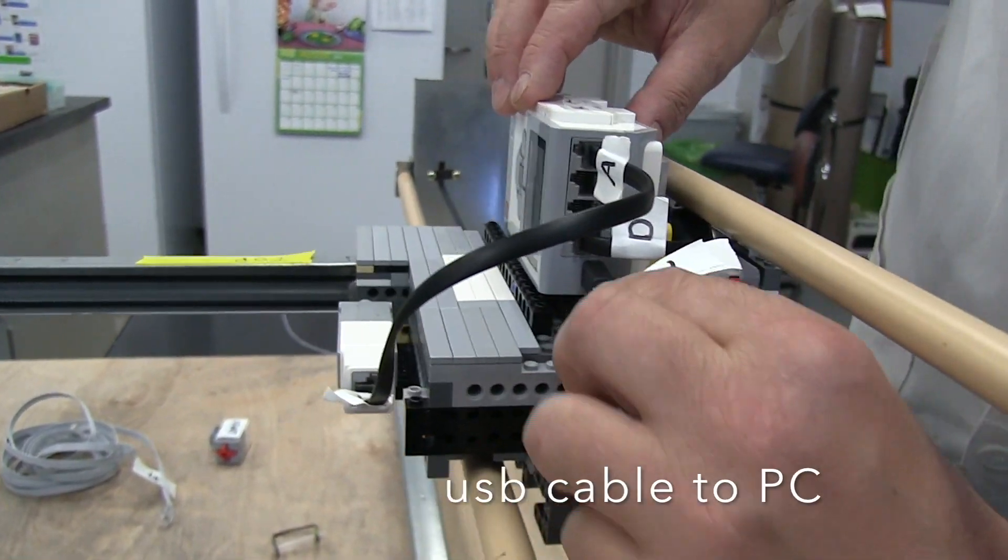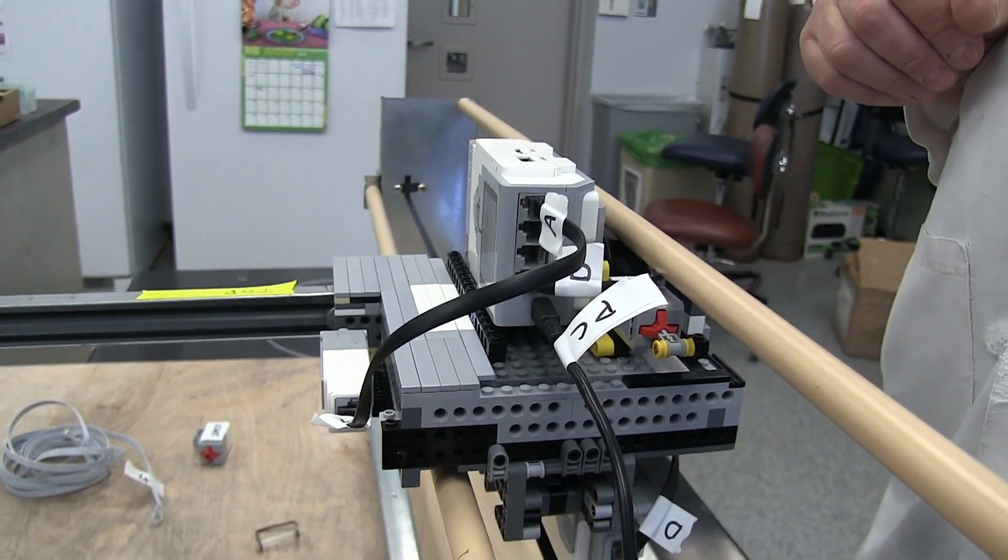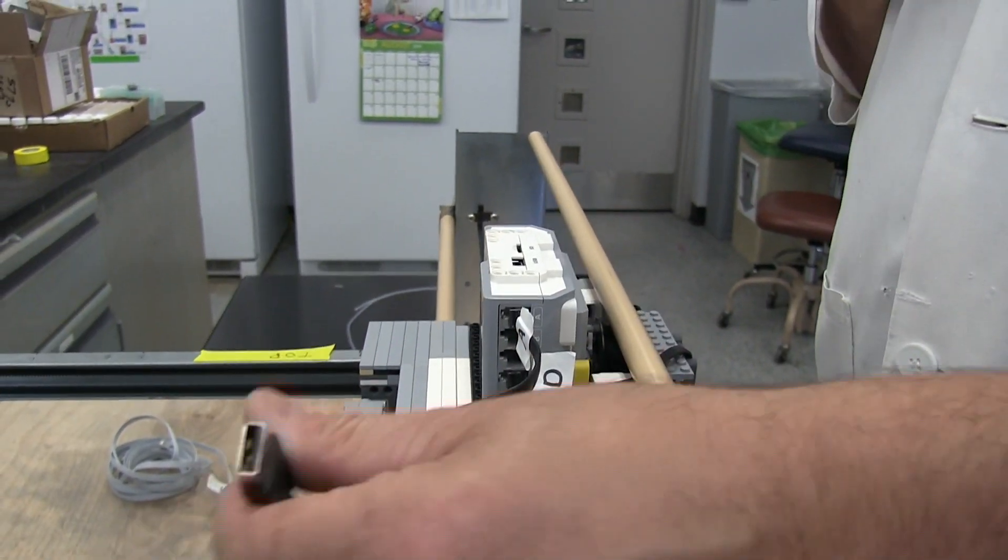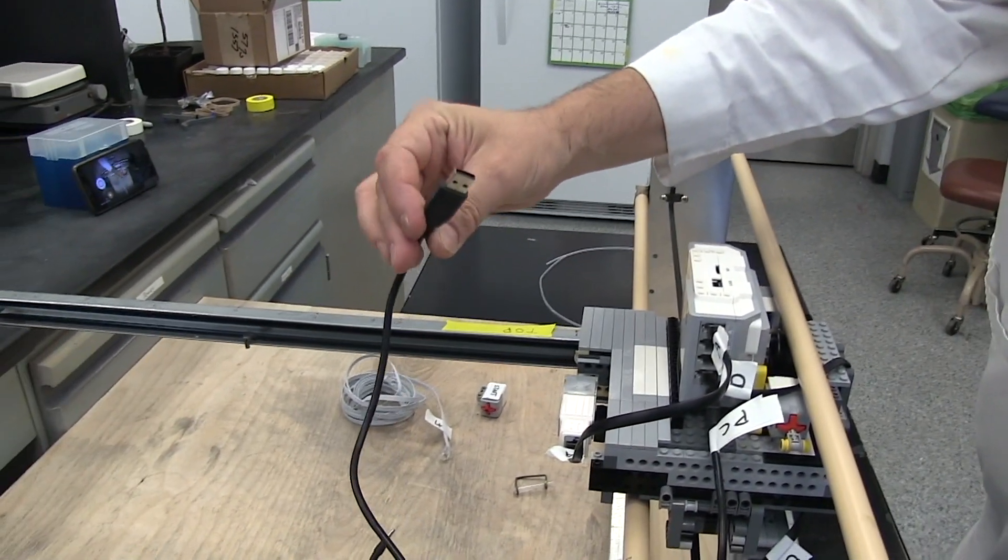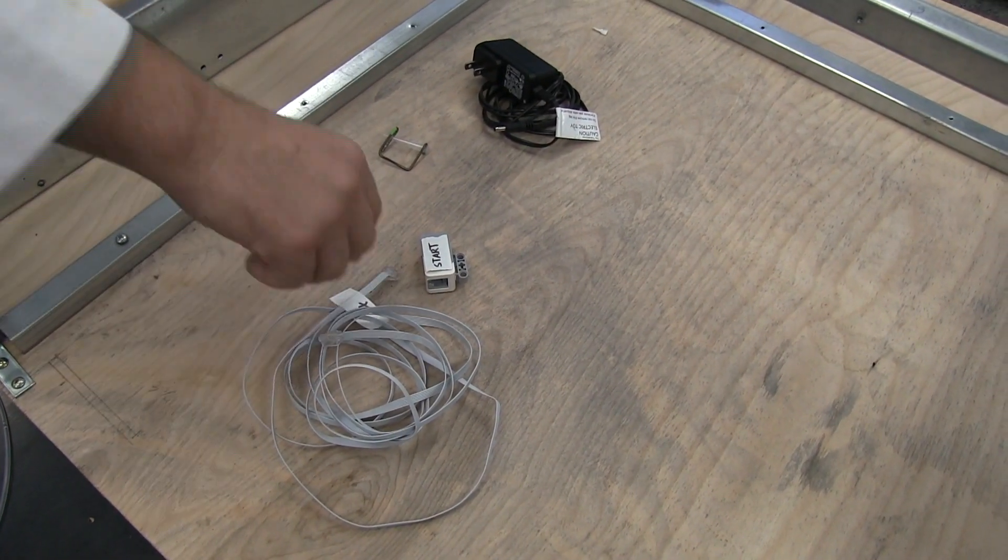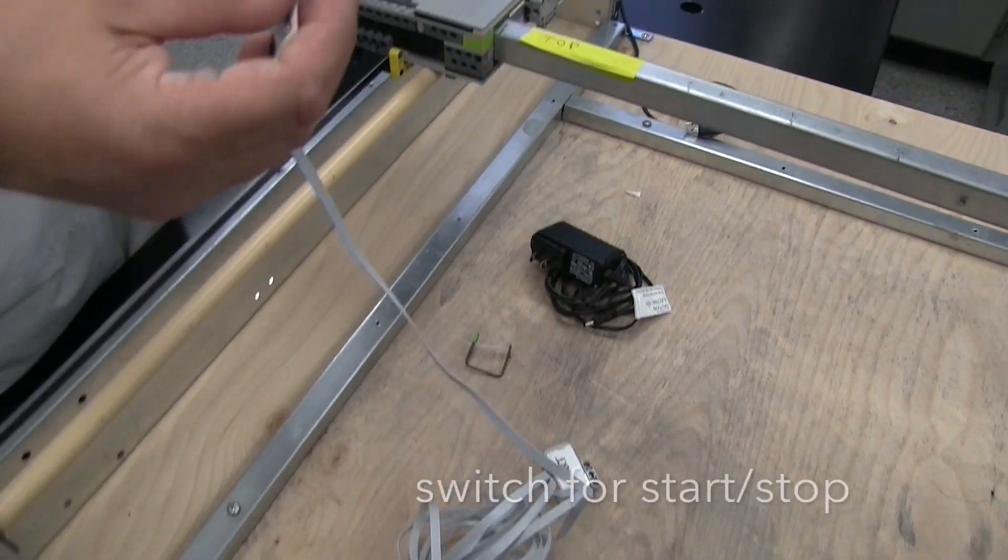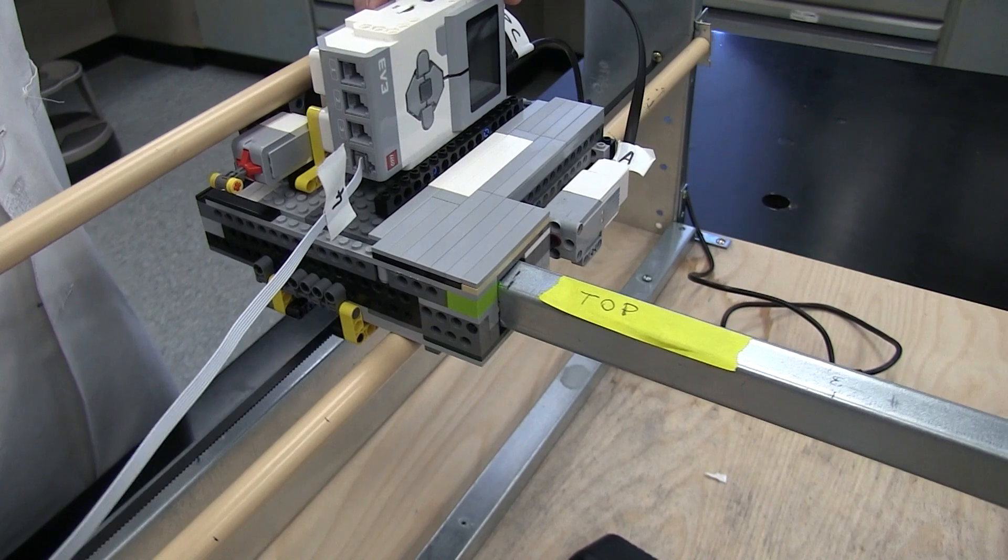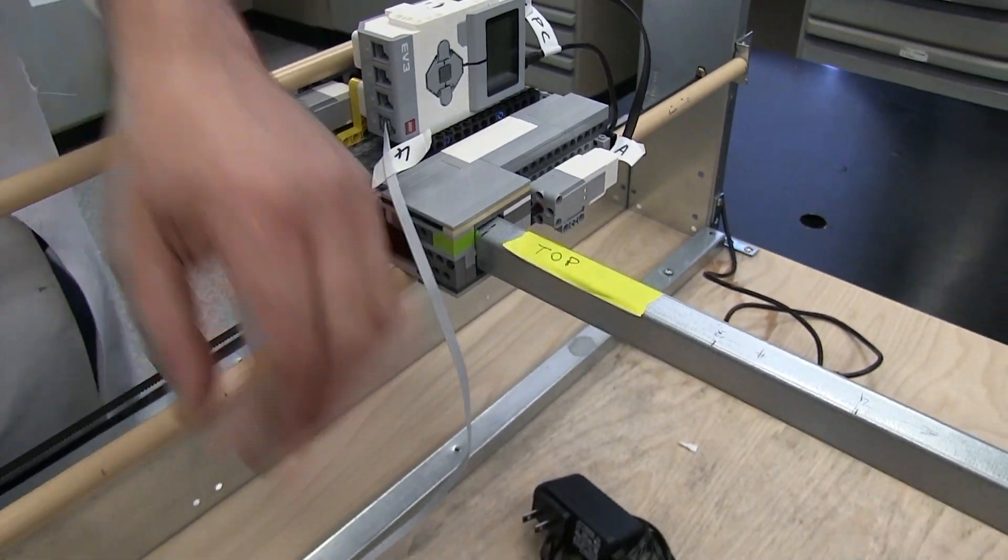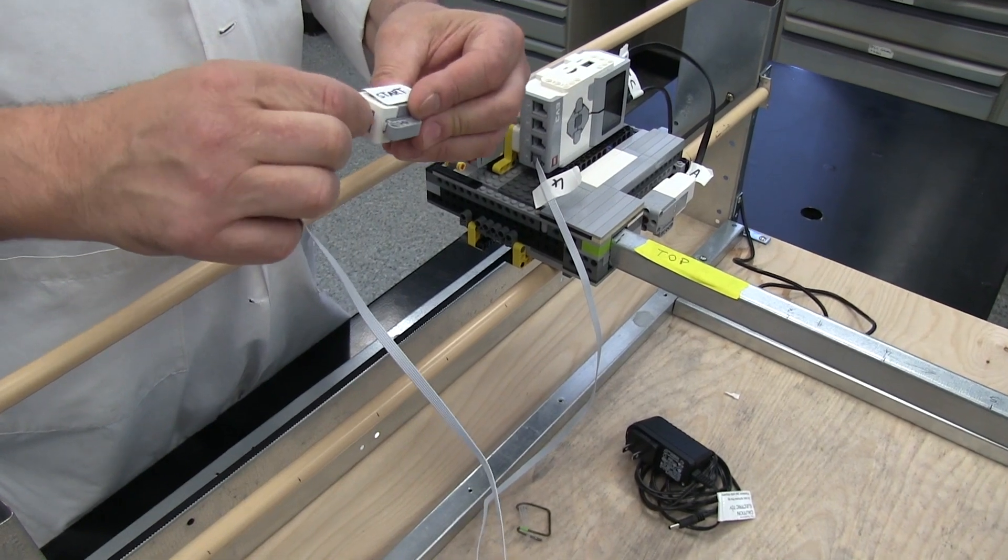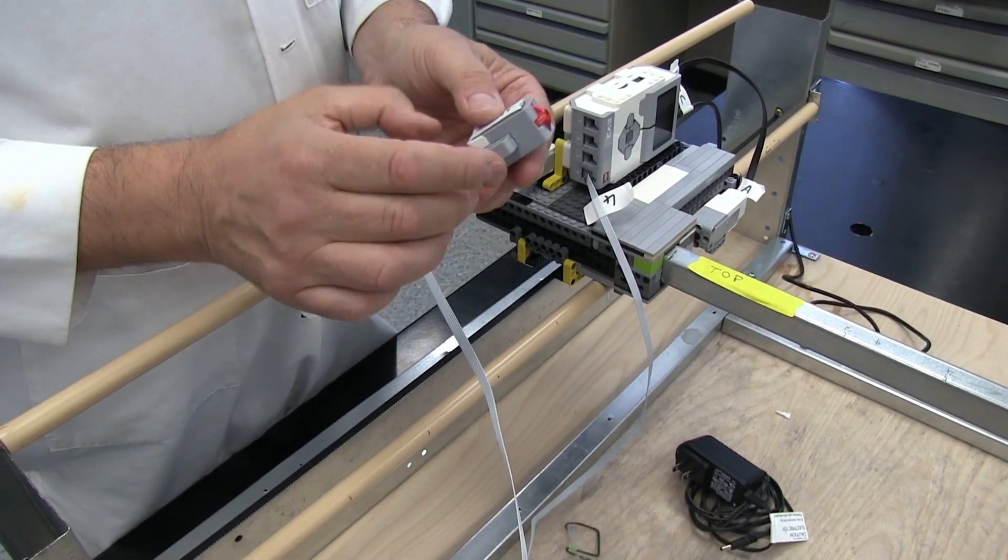The USB cable will now be attached to the EV3 unit and connected to the computer. This will allow for programming of the EV3 unit from the computer. The final cable will be connected to the switch that runs the program and initiates movement of the robotic arm.